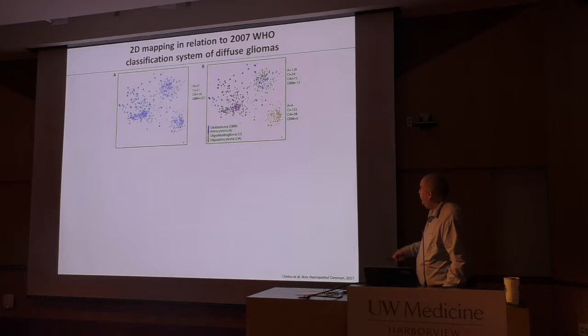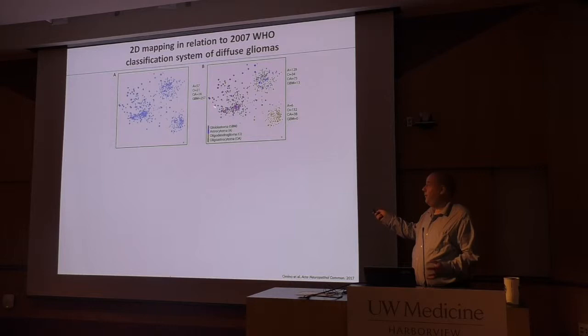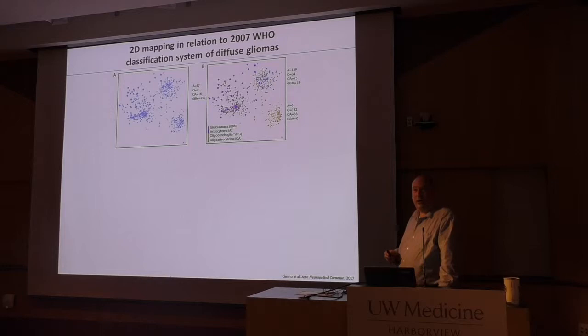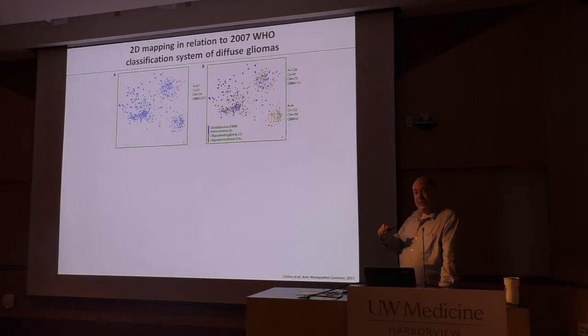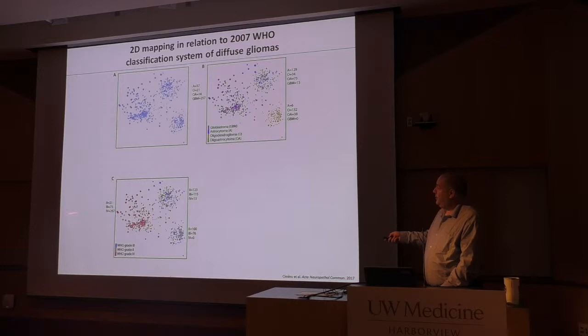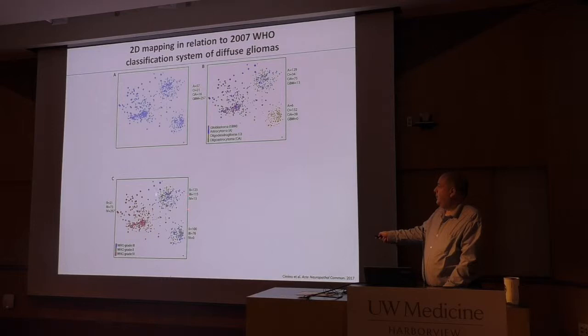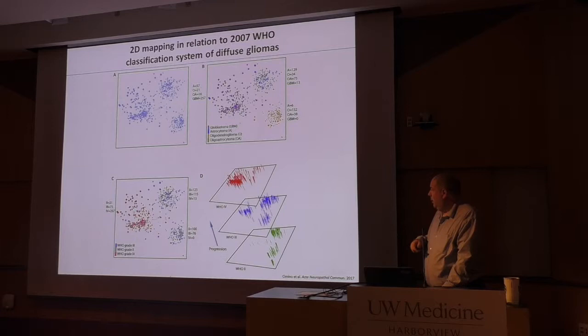Mapping the original 2007 histological diagnoses onto these clusters: one cluster is basically what was called oligodendroglioma or mixed oligo-astrocytoma, another is mostly glioblastoma with a few lower-grade tumors mixed in, and the third is a hodgepodge. This really shows the heterogeneity — histology doesn't necessarily predict molecular structure. Most grade fours are in the left cluster and most grade 2 and 3 are in the other clusters.